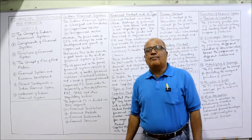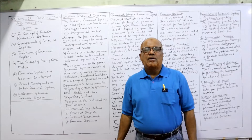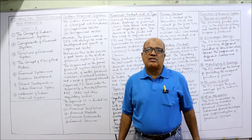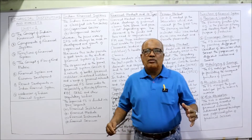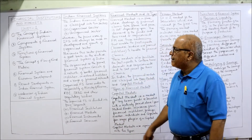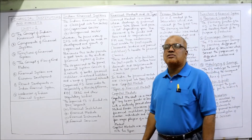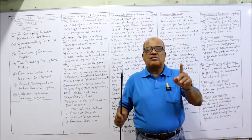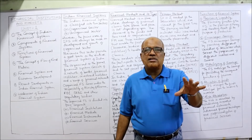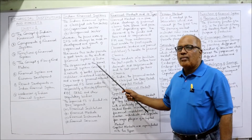Economic development depends much on the financial sector, so the government focuses more on the organized financial system, through which economic development can take place. This sector provides a good base for the entire financial system in India — the complete financial system depends on the organized sector, so the government is giving more concentration to the organized sector.